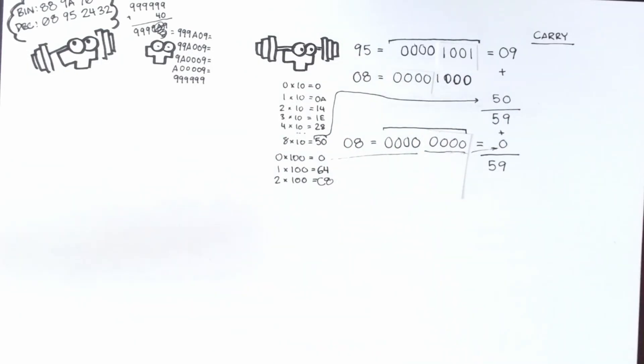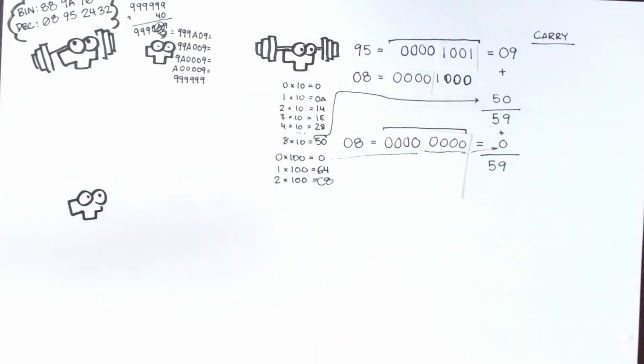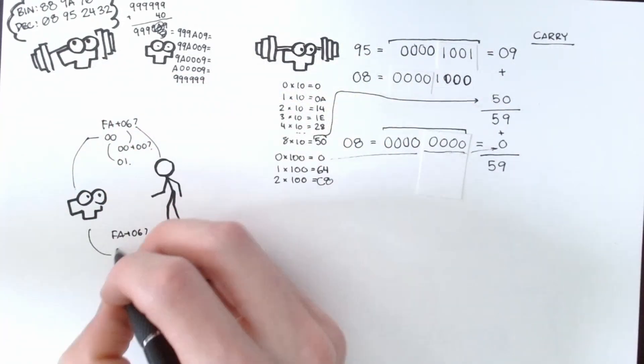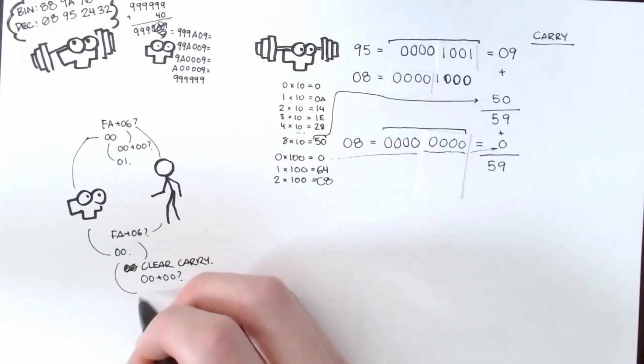In 6502 assembly, the only type of addition you can do is add with carry. What this means is that the processor internally tracks where the previous addition needed to carry a 1 into the next byte, and if it did, it'll add an extra 1 to whatever addition it does next.